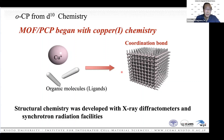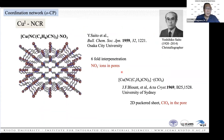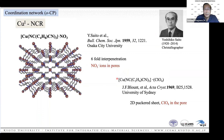Structural chemistry was developed with X-ray diffractometers and synchrotron radiation facilities. In 1959, a compound was synthesized having copper(I) and a dinitrile ligand, with an extended structure showing sixfold interpenetration. In the cavities, the counter-anion NO3 was accommodated. Later, Brown also synthesized a similar type of compound.